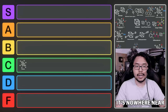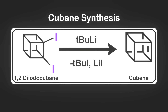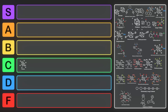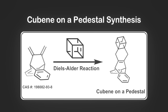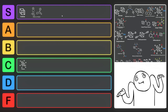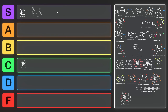Cubane is cool, but what about cubene? You might not think cubene really exists, but it has been prepared via 1,2-diiodocubane upon treatment with tert-butyllithium — cubene is formed as an intermediate. Cubene is amazing, it goes right into S tier. And you might wonder why anyone would even make cubene — obviously so that we can put it on a pedestal. It's added onto a pedestal via a Diels-Alder type reaction. Is it useful? Probably not, but it is kind of cool.